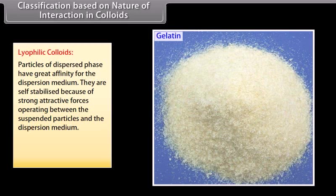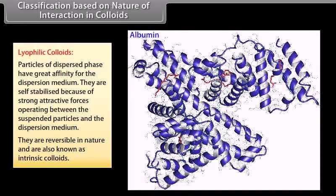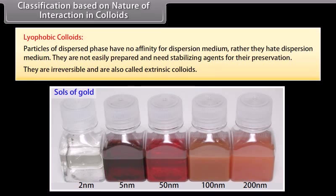Classification based on interaction between dispersed phase and dispersion medium: Colloids are divided into lyophilic and lyophobic colloids. Lyophilic colloids: particles of the dispersed phase have great affinity for the dispersion medium; they are self-stabilized due to strong attractive forces, reversible in nature, and also known as intrinsic colloids — examples include gums, starch, gelatin, and albumin. Lyophobic colloids: particles have no affinity for the dispersion medium; they are not easily prepared, need stabilizing agents, are irreversible, and are also called extrinsic colloids — examples include salts of gold, silver, and ferric hydroxide.